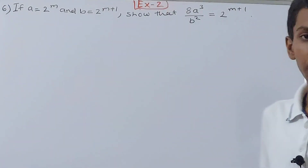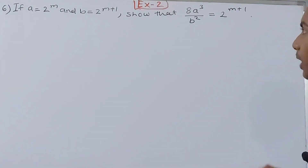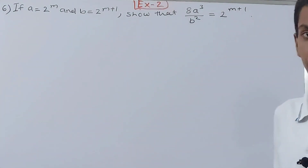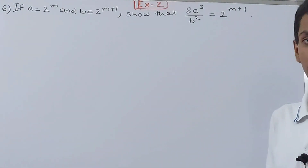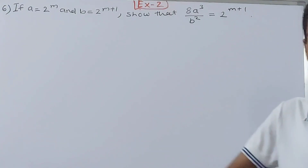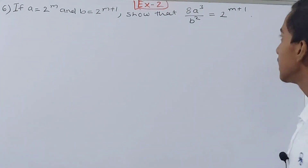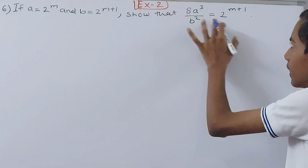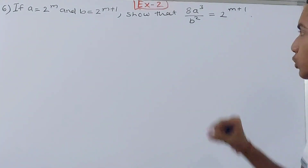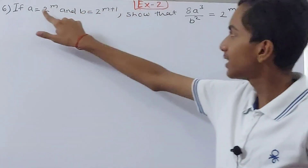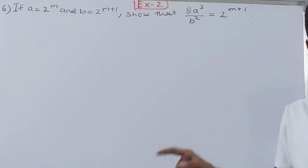The question is: if a is equal to 2 to the power m, and b is equal to 2 to the power m plus 1, show that 8a³ upon b² is equal to 2 to the power m plus 1. So basically we have to prove this equation, and the values of a and b are given. There is only a difference of plus 1 in the exponent.